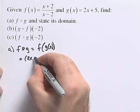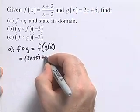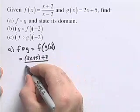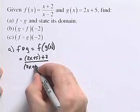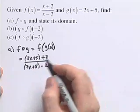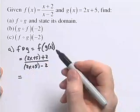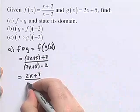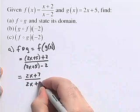So we'll have 2x plus 5 plus 2, over 2x plus 5 minus 2, replacing x by 2x plus 5. We're going to simplify that. The numerator will have 2x plus 7, and our denominator will get 2x plus 3.